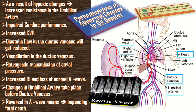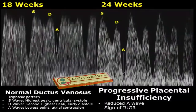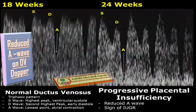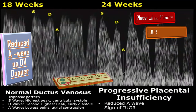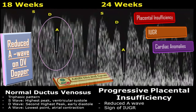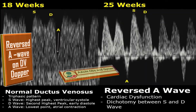Reversal of the A wave is an absolutely abnormal condition and should never ever be underestimated. Before discussing the reversed A wave, let us talk about the reduced A wave. The reduced A wave is very important in diagnosing certain conditions like placental insufficiency, intrauterine growth retardation, and cardiac abnormalities. Here in this Doppler you can see the normal waveform at 18 weeks of gestation, but at 24 weeks of gestation you can see there is a reduced A wave, indicating underlying problems like placental insufficiency or intrauterine growth retardation.